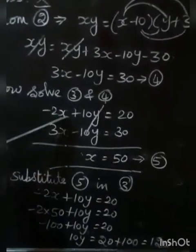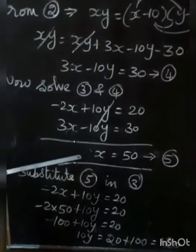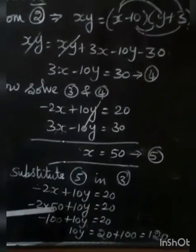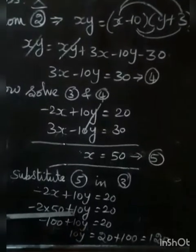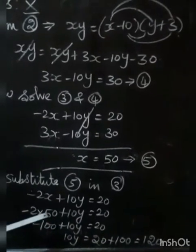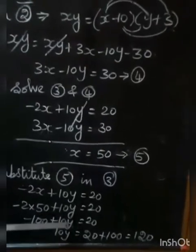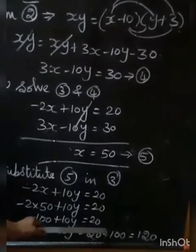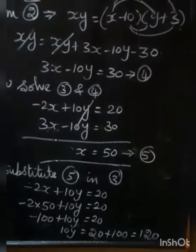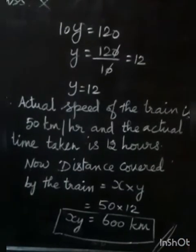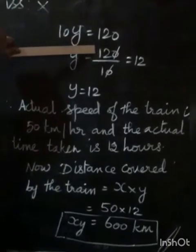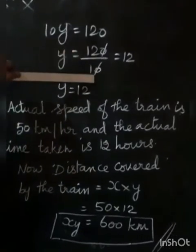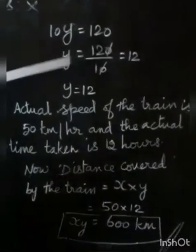Substituting X equals 50 into the third equation: minus 2 into 50 plus 10Y equals 20. Minus 100 plus 10Y equals 20. So 10Y equals 20 plus 100 equals 120. Dividing both sides by 10, Y equals 120 divided by 10 equals 12.